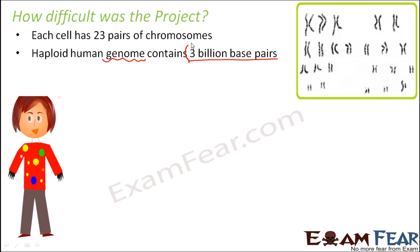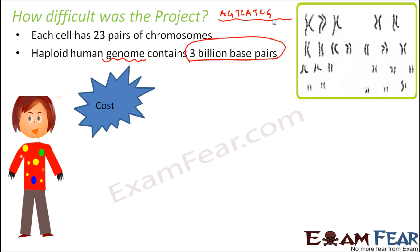Understanding or determining the sequence of 3 billion base pairs was not at all an easy task. When I say sequencing, I mean the sequence of bases present on a DNA strand — for example, A, G, T, C, A, T, C, G — that kind of sequencing. When you have 3 billion base pairs, the sequencing is going to be really, really long. So there were many difficulties because of this huge aspect of the project.